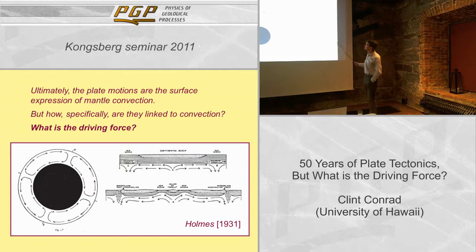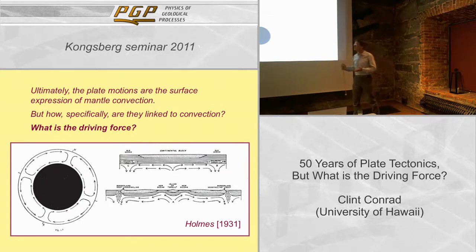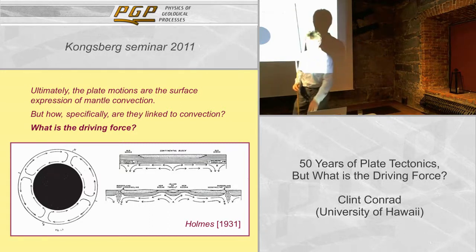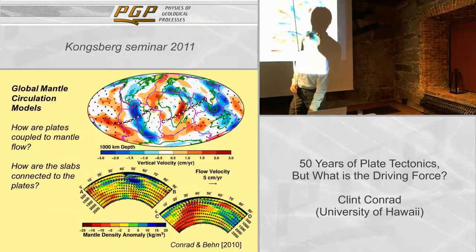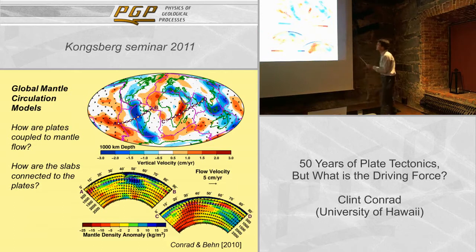Holmes 1931 was one of the first to propose that plates are the surface expression of convection, and we even had diagrams that looked somewhat similar to convection currents. But then, how specifically are the plates linked to the convective circulation? That's what I'm going to try to work out today.